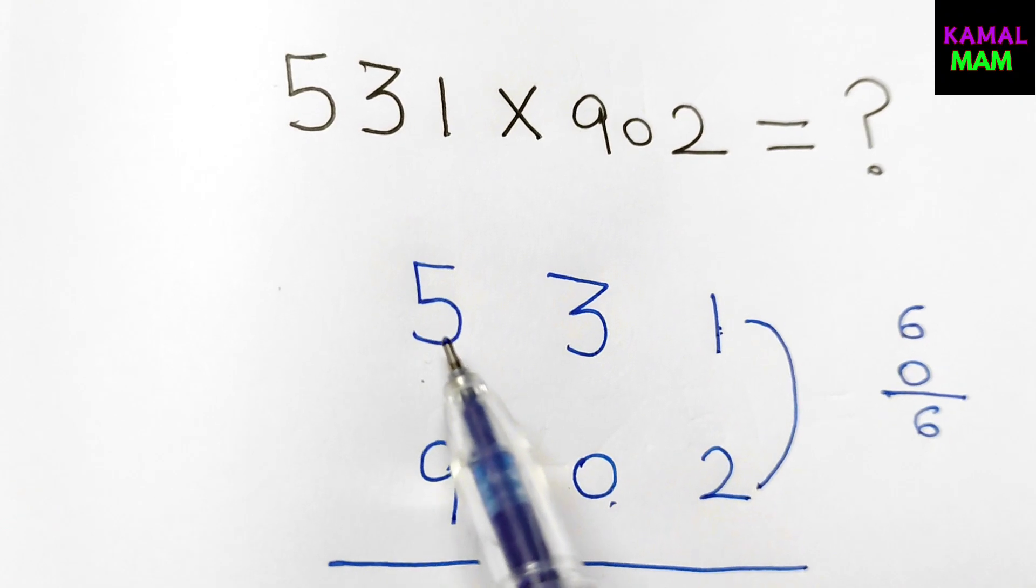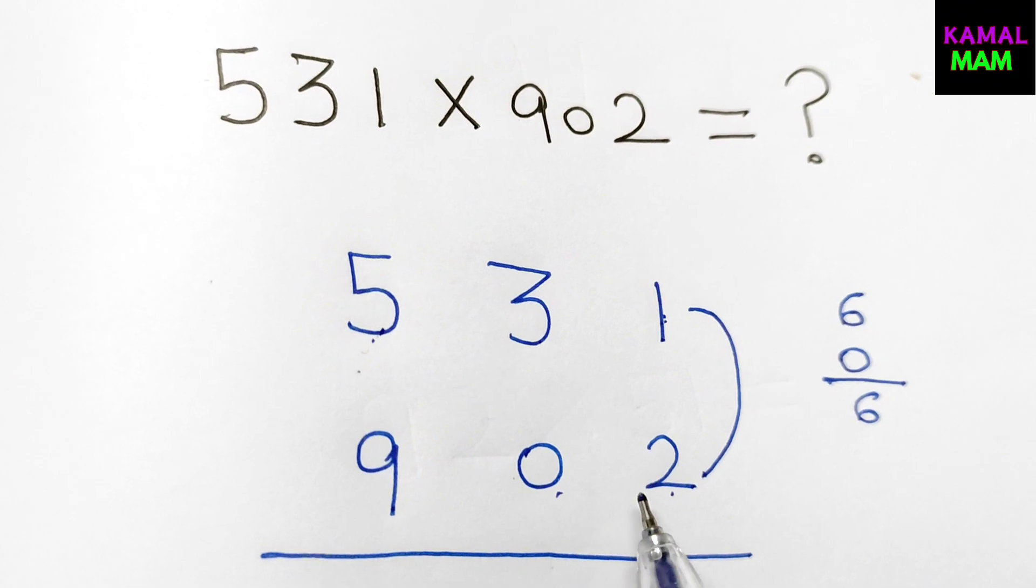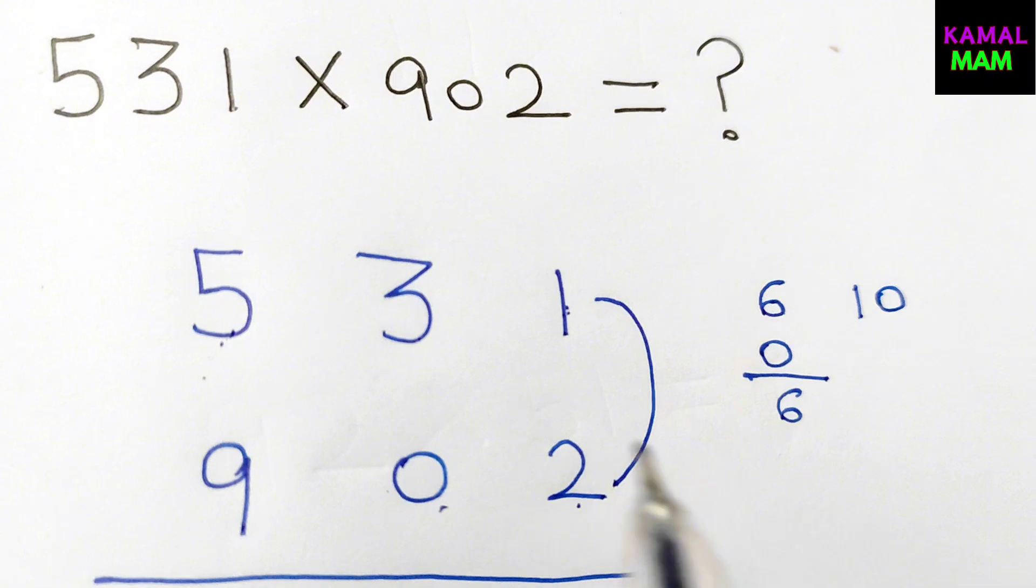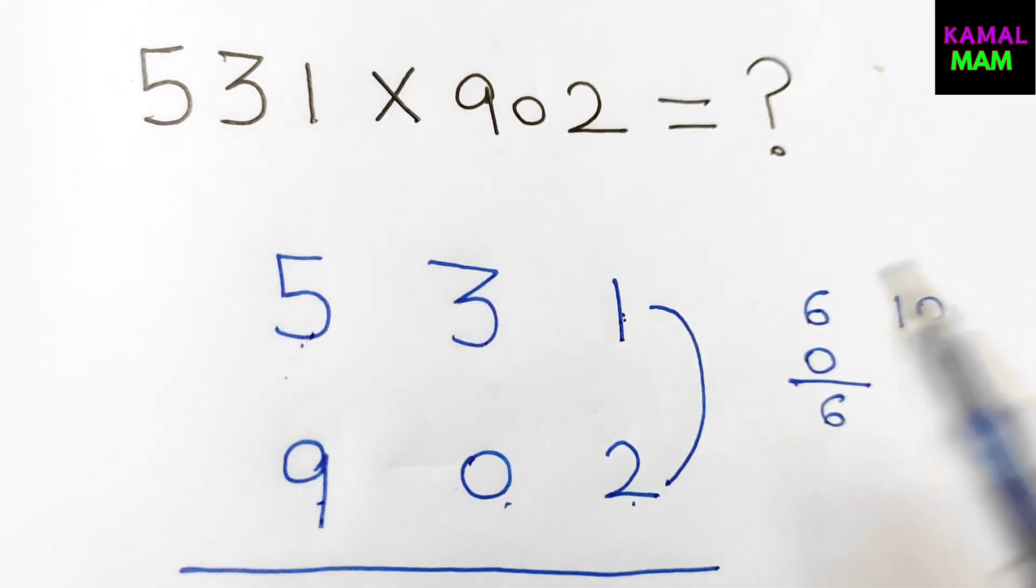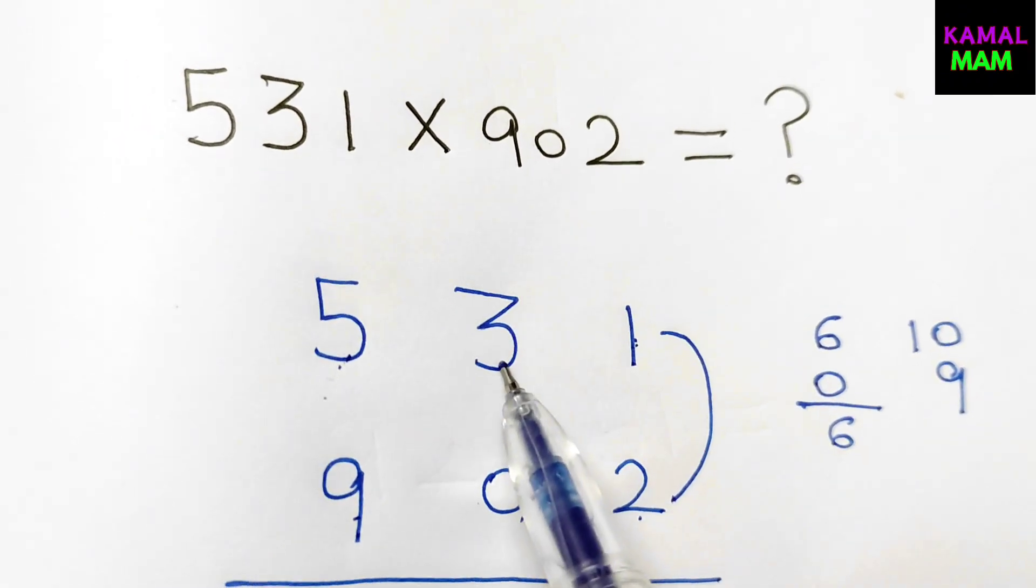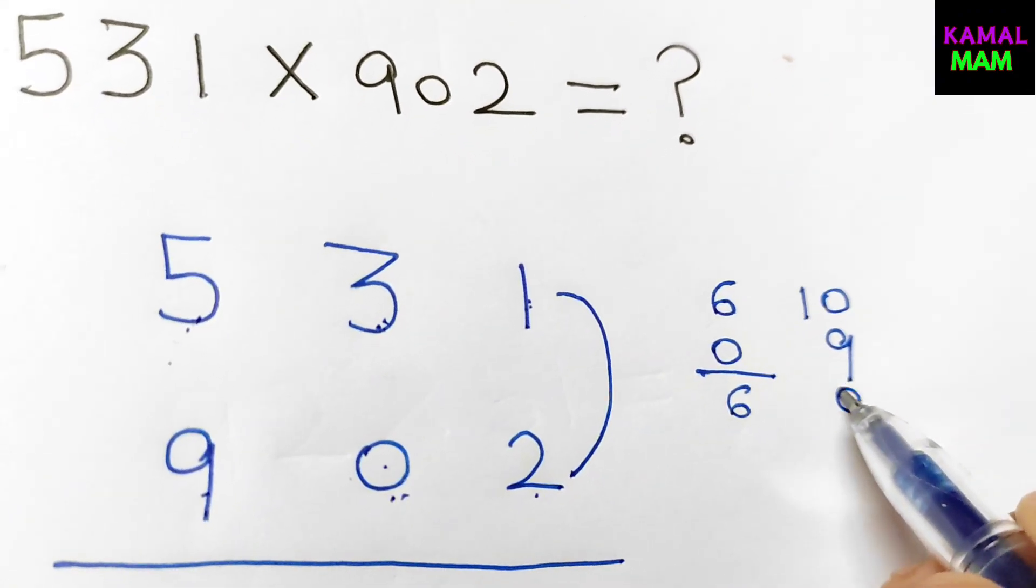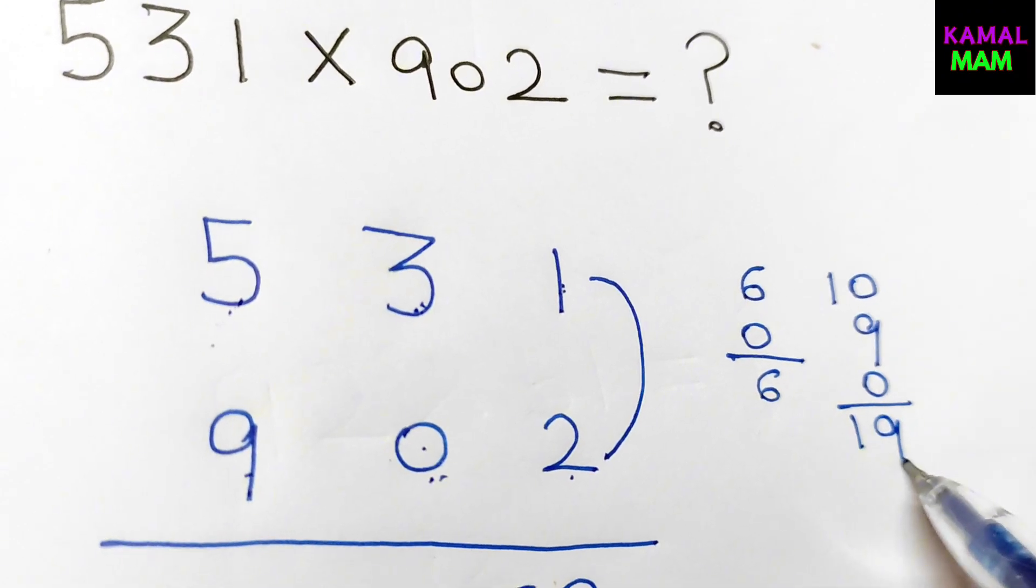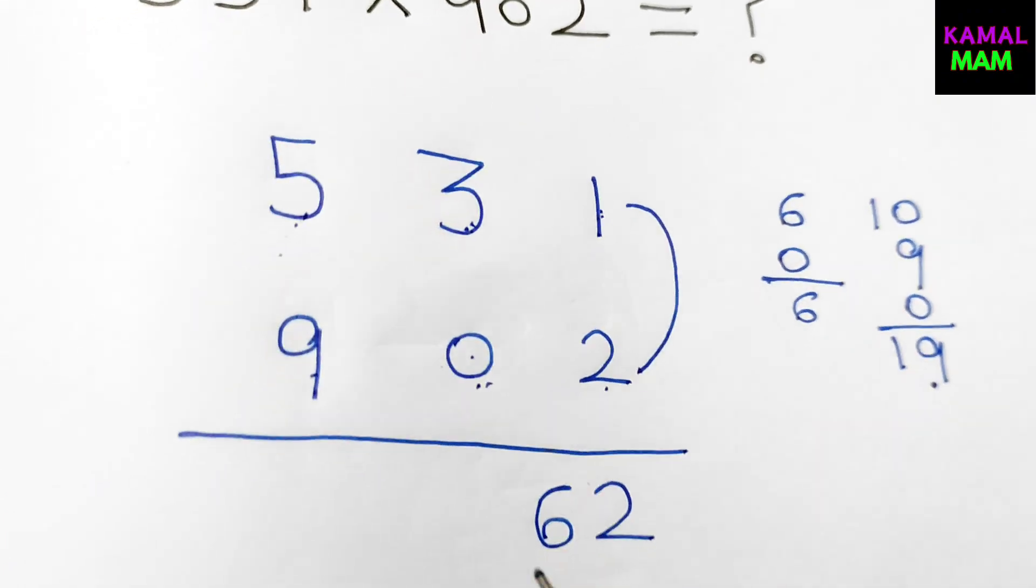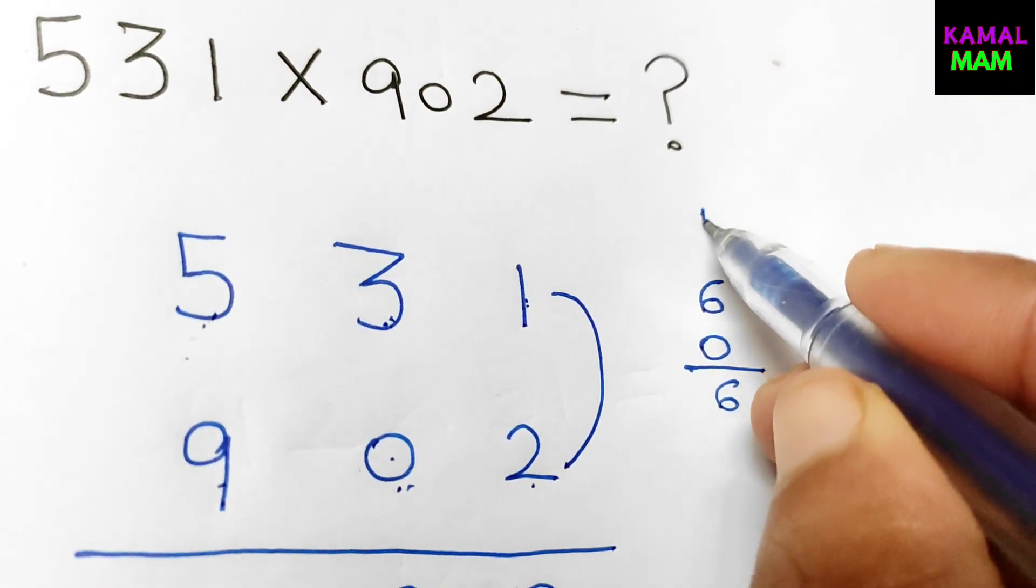Now take the corner digit and cross multiply it. 5 into 2, we get 10. Now 1 into 9, we get 9. And then multiply up and down digits, that is 3 into 0, we get 0. Now just add them up, we get 19. Now we have to write only the last digit here, 9. Now 1 is in our hand.